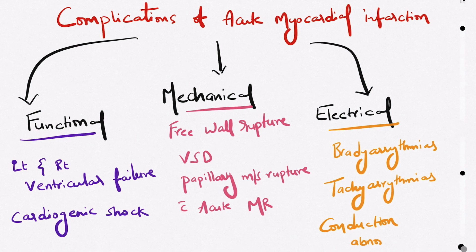and fascicular blocks. So these are the complications of acute myocardial infarction. Thank you for watching, please subscribe if you like the video. Have a nice day!